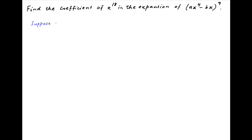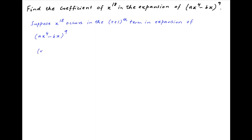Let's assume that x raised to the power 18 occurs in the (r+1)th term in the binomial expansion of ax raised to the power 4 minus bx, whole raised to the power 9. The (r+1)th term in the binomial expansion is equal to 9 choose r, multiplied by ax raised to the power 4, whole raised to the power 9 minus r, multiplied by minus bx, whole raised to the power r.